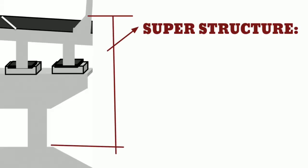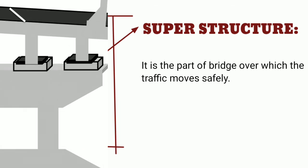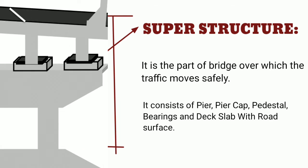Super-structure is the part of the bridge over which the traffic moves safely. It consists of pier, pier cap, pedestal, bearings, and deck slab with road surface.